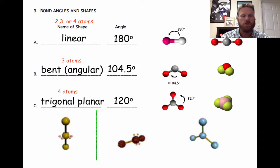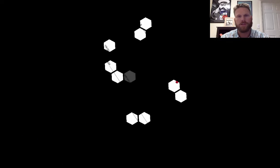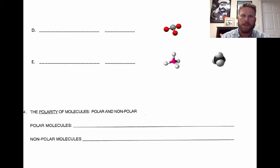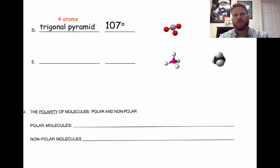The other two molecular shapes we will consider are trigonal pyramid. They have 107 degree bond angles. So this also occurs when there's four atoms bonded together. And in this case, the three atoms bonded to the central atom do not lie in the same plane. So they're slightly offset and that's what gives the 107 degree bond angle.